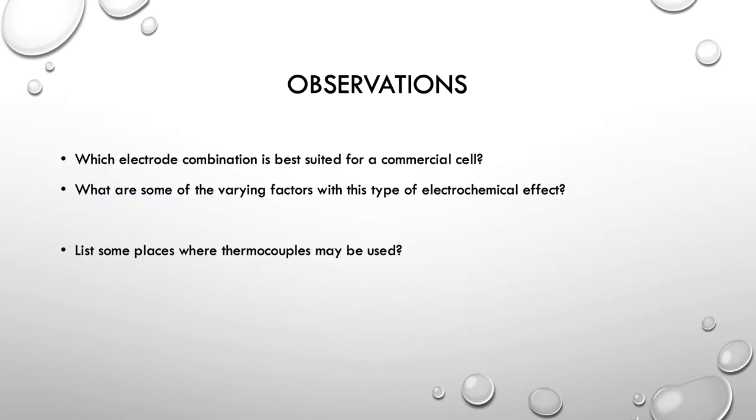So what are some of the observations that we've got from this? So which electrode combination is best suited for a commercial cell? And that would be the copper and the zinc. I mentioned that a little bit earlier. You've got the best potential difference there. The two products, the copper and the zinc, are probably easy to get a hold of. So if you want to make a commercial cell, that would probably be the go.